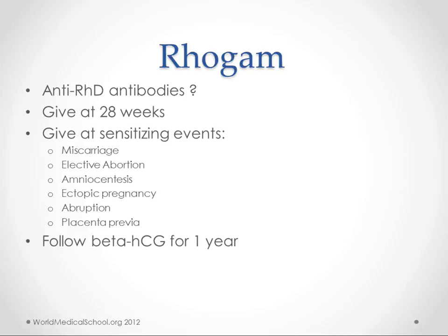We also want to follow beta HCG for a year after a potential sensitizing event such as a miscarriage or an abortion, and prevent pregnancy from happening in that timeframe.